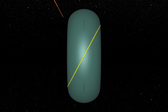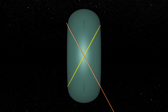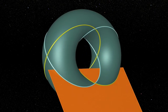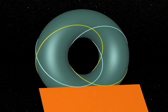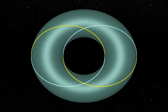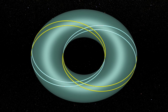Of course there is not just one bi-tangent plane. Here is another one, cutting the torus along two other Villarceau circles. And one can do the same for all other bi-tangent planes — we just need to rotate around the axis of symmetry.